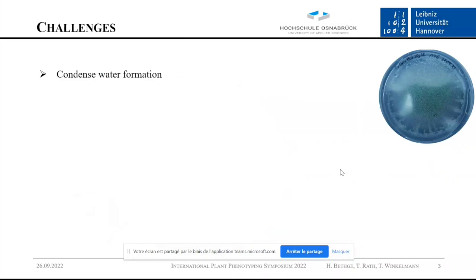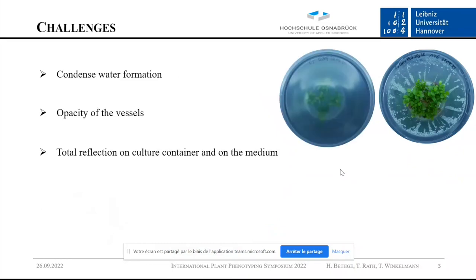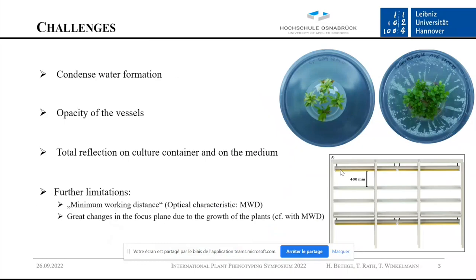If you want to do phenotyping in this cultivation, you face a number of challenges. As you can see in this picture, the vessels have condensed water formation. The container material is not fully transparent, and there is total reflection at the lid and at the media surface. Additionally, there is only limited space because the plants are cultivated in a multi-layer shelf system, which restricts the availability of certain sensor technology due to minimum working distances.